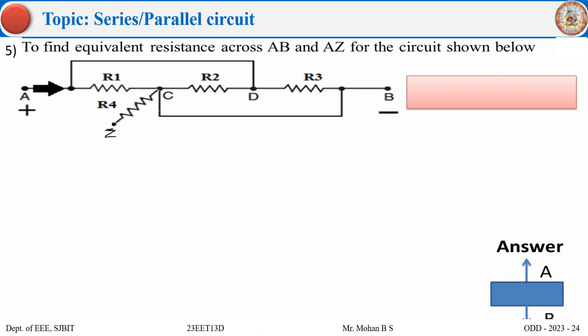Here is a given problem where you have to find R equivalent across AB and AZ for the given circuit. You can take any value for R1, R2, R3, and R4. The method remains the same - whatever may be the values, apply the same method, substitute, and then you can find.